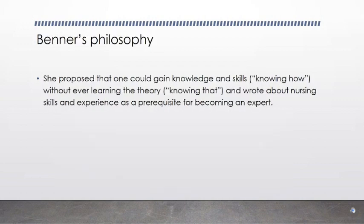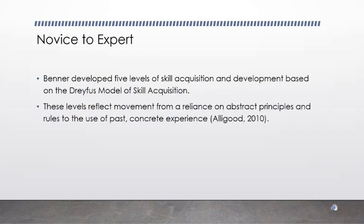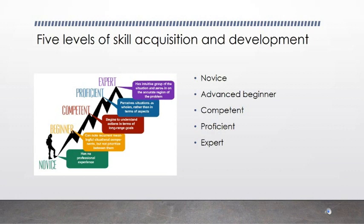She proposed that one could gain knowledge and skills, or the knowing how, without ever learning the theory, or the knowing that, and wrote about nursing skills and experience as a prerequisite for becoming an expert. Benner's five levels of skill acquisition and development are based on the Dreyfus model of skill acquisition, reflecting movement from a reliance on abstract principles and rules to the use of past concrete experience. These five stages include: 1. Novice, 2. Advanced Beginner, 3. Competent, 4. Proficient, and 5. Expert.